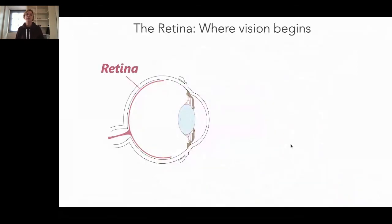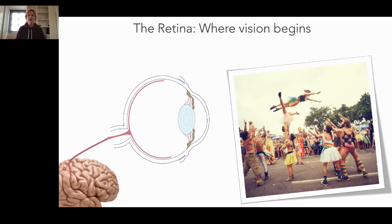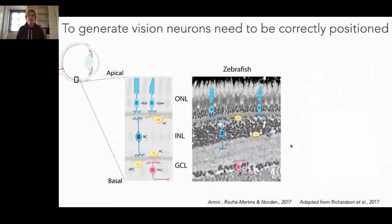When we think about the retina, it's a very important organ and a very important part of the central nervous system because the retina is really where vision begins. The retina is the part of the brain that allows us to perceive our environment, to perceive color and contrast. The retina has to connect to the brain, to the visual cortex, but it is an outpost of the central nervous system by itself.